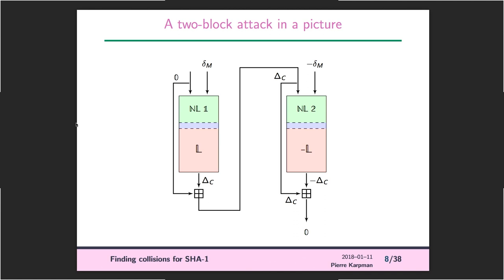First, we have a zero difference on the top left because the IV is the same in both cases, and we have a delta-M difference on the message. If everything goes well, at the end of the rectangle symbolizing the SHA-1 computation, we get a difference in the chaining value, which is delta-C. The feedforward arrow is for Davis-Meyer — we add the IV back, but since there was no difference in the IV, we still get delta-C.